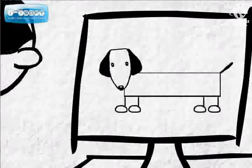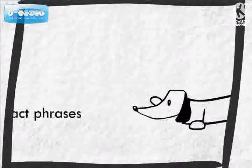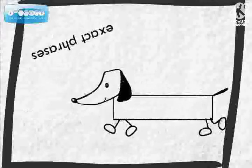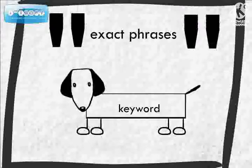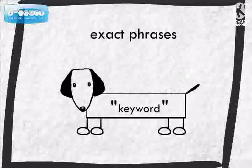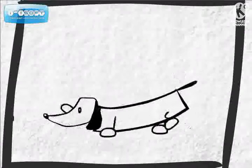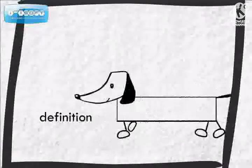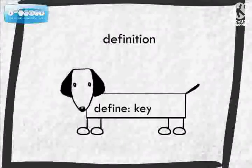Here are a few tips when using search engines and keywords. When looking for exact words or phrases, enclose your keyword in quotation marks. When looking for a definition, type 'define' before the keyword.